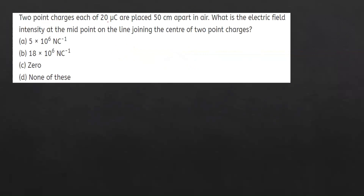Two point charges of 2 microcoulombs and 20 microcoulombs are placed 50 cm apart in air. What is the electric field intensity at the midpoint on the line joining the centers of the two charges? The midpoint is at 25 cm from each charge.